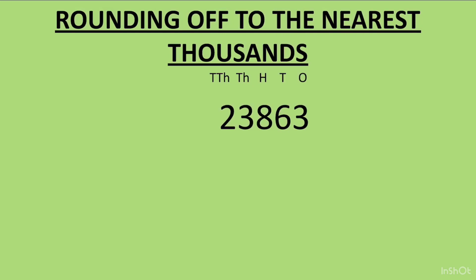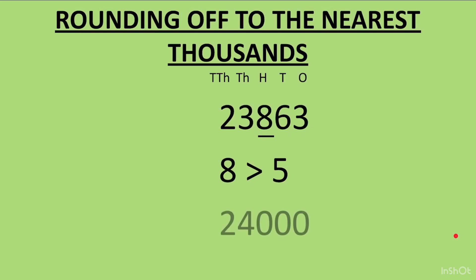Rounding off to the nearest thousands: take the example 23863. To round to thousands, we look at the digit at hundreds place, which is 8. Since 8 is greater than 5, we add 1 to the thousands digit, changing 3 to 4, and all digits to the right (8, 6, and 3) become 0. So 23863 rounds off to 24000.